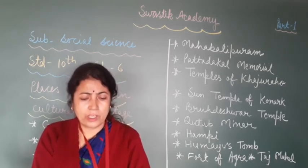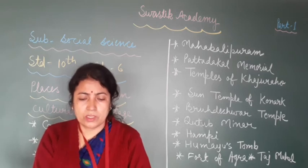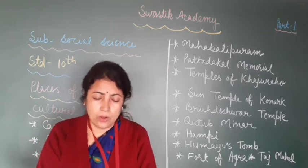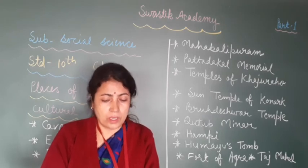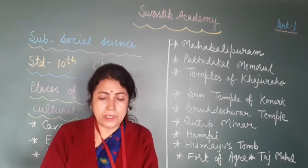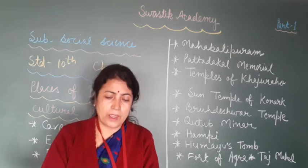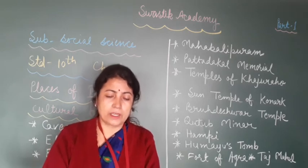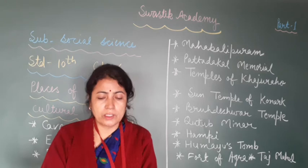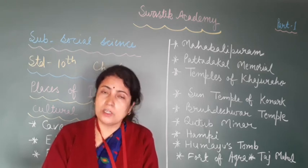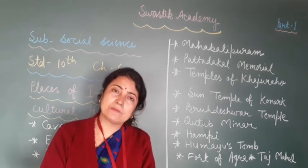Ellora Caves are situated in Aurangabad district in Maharashtra. There are 34 caves in all, divided into three groups of caves which are different from each other: Buddhist caves, Hindu caves, and Jain caves.